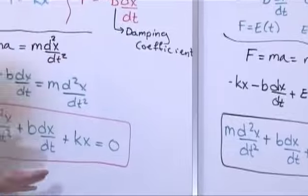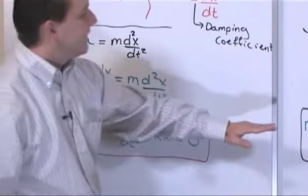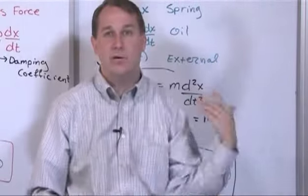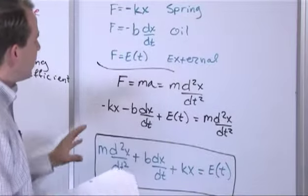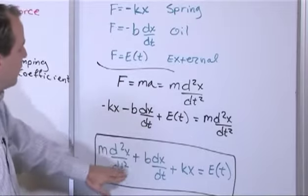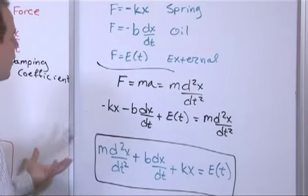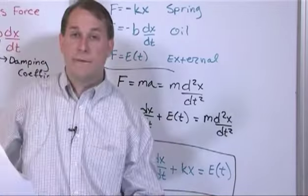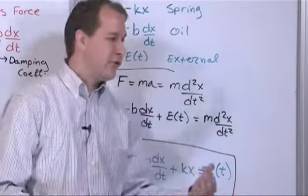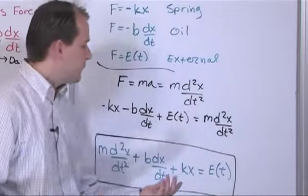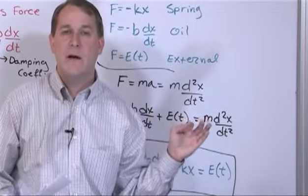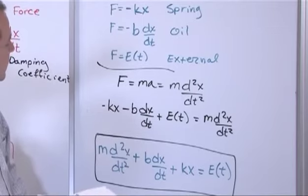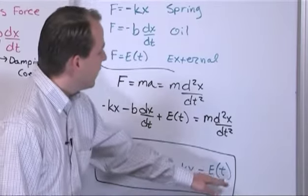The difference between this and the previous equation is just the forcing function E(T) on the other side. The left-hand side describes the system — terms arising from how the system is built: Newton's law, the spring constant, the damping coefficient. The right-hand side has external forces. If it were vertical, gravity would appear on the left. Whatever external force acts independently goes on the right side.